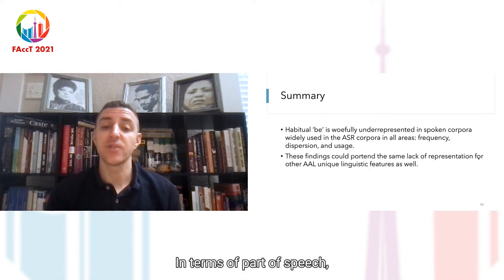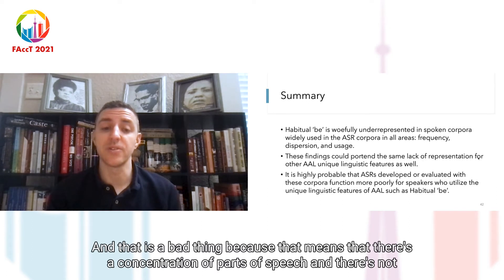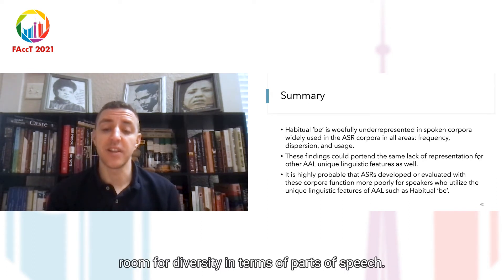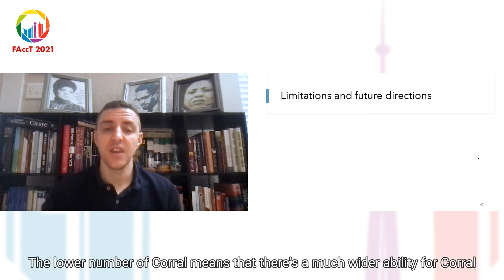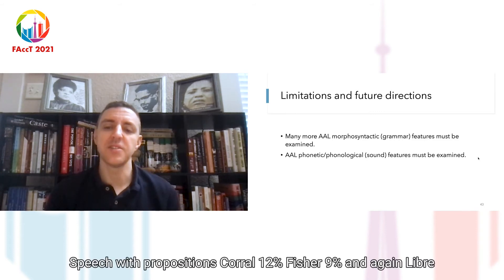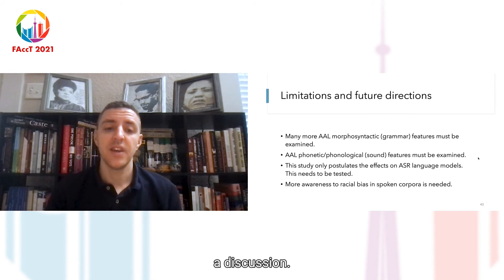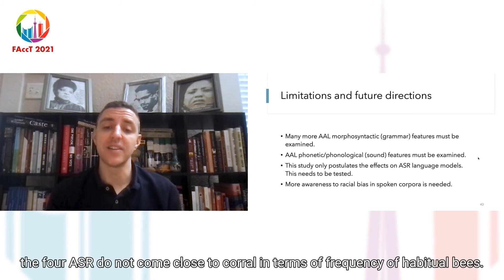These findings could portend the same lack of representation for other AAL unique linguistic features as well. It is highly probable that ASRs developed or evaluated with these corpora function more poorly for speakers who utilize the linguistic features of African-American language, such as habitual B. Limitations and future directions: there are many more AAL morphosyntactic features that must be examined. AAL phonetic and phonological features must be examined as well. This study only postulates the effects on ASR language models — this needs to be tested. And finally, more awareness of racial bias in spoken corpora is needed.